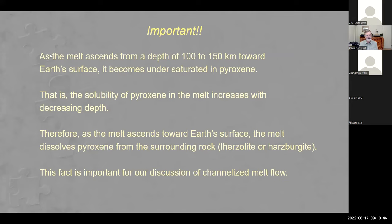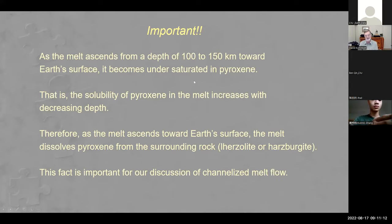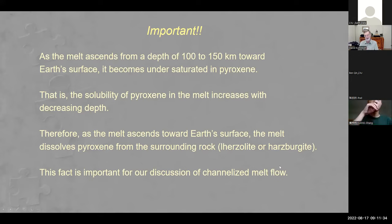An important fact to consider is that as melt ascends from where it's first produced — 100 to maybe 150 kilometers depth — toward Earth's surface, it becomes undersaturated in pyroxene. The melt deep down is fully saturated in pyroxene, but as you bring it up it wants more and more pyroxene. The solubility of pyroxene in the melt increases with decreasing depth, so as the melt ascends it dissolves pyroxene from the surrounding rock — which could be lherzolite or harzburgite. This is important for the discussion of channelized flow, because you have a reactive melt that becomes increasingly hungry for pyroxene as it rises.